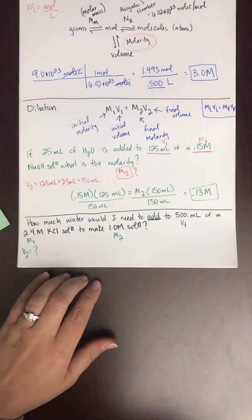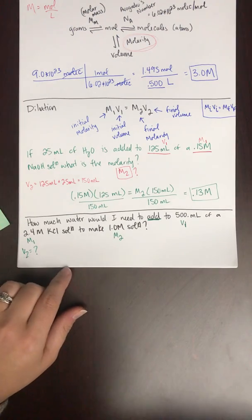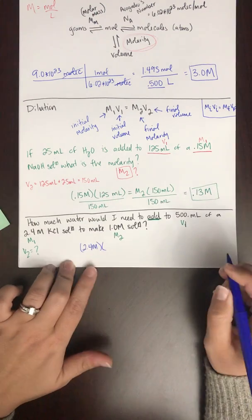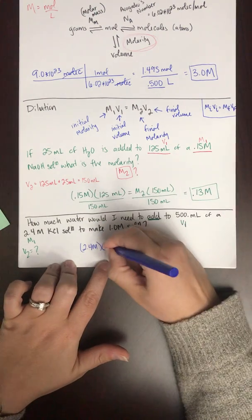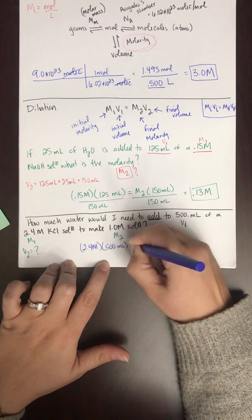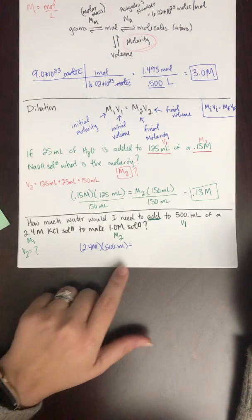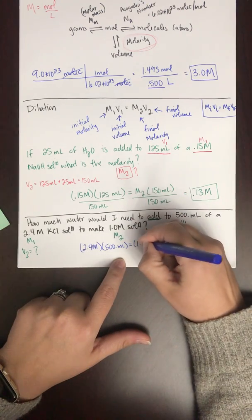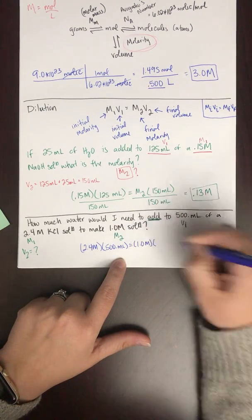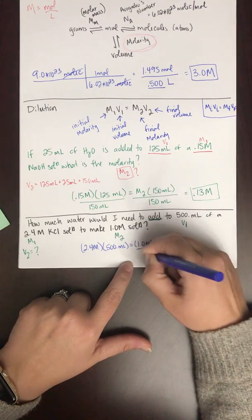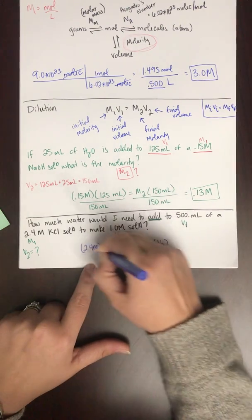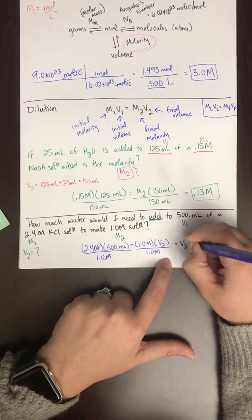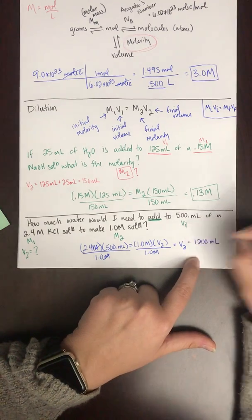So I'm going to write this out: M1V1 equals M2V2. So M1, 2.4 molar, V1, 500 milliliters, M2, 1.0 molar, V2 is what I'm solving for. So I'm going to divide both sides by 1.0 molar. And I get that V2 equals 1,200 milliliters.